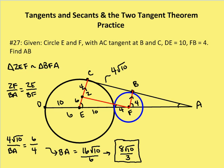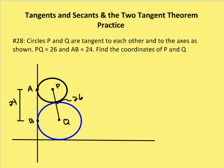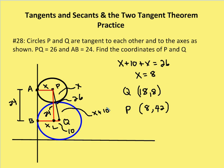Number 28: circles P and Q are tangent to each other and to the axes as shown. PQ, the distance between the centers, is 26. AB is 24. What we're going to do is identify the length between A and P as X, and use our common external tangent information and procedure to find out the length of P to Q — that's really the line of centers. Actually, we want to find out what LQ is.